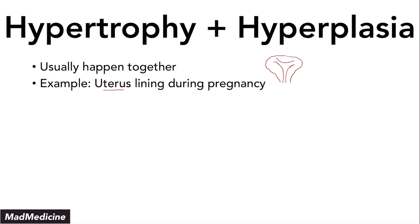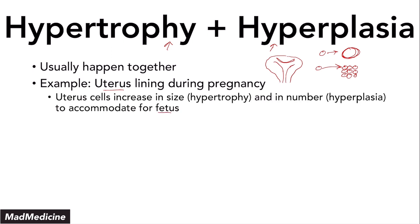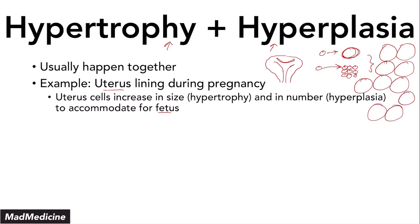The uterus can only grow the cells through hypertrophy so much — there is a limit, otherwise the cells would burst. At the same time, you can only grow so many cells through hyperplasia. During the state of pregnancy, when the uterus is growing, both hypertrophy and hyperplasia are happening at the same time in order to accommodate the massive growth that happens in the human body. The uterine cells increase in both size and number to accommodate the fetus.